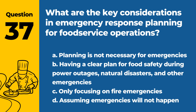Question 37. What are the key considerations in emergency response planning for food service operations? A. Planning is not necessary for emergencies. B. Having a clear plan for food safety during power outages, natural disasters, and other emergencies. C. Only focusing on fire emergencies. D. Assuming emergencies will not happen. Answer: B. Effective emergency response planning involves preparing for various scenarios that could impact food safety.